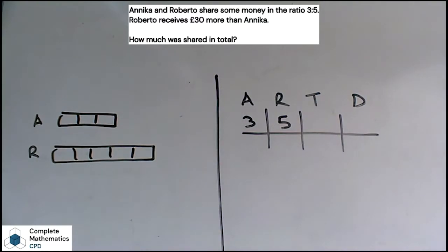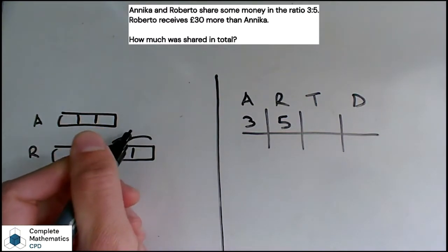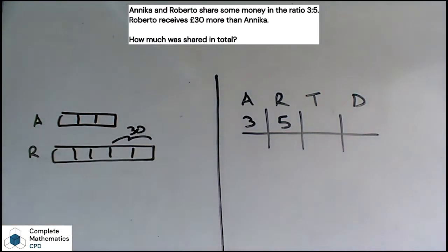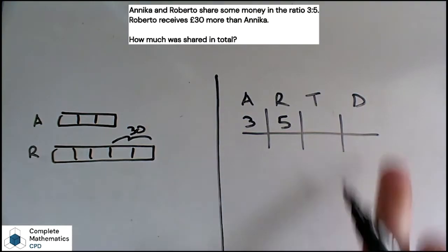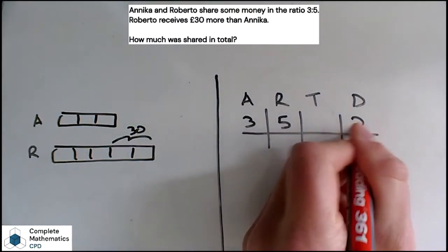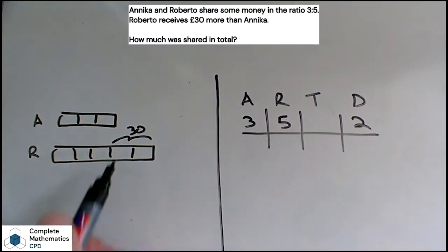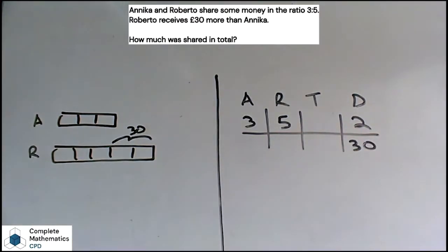Okay, let's read the next bit of information then. So Roberto receives £30 more than Anika. On the bar model we're looking at these two extra parts here being worth £30. Where does that sit in our ratio table? Well, that goes in our difference column. We know that Roberto gets two parts more than Anika, these two parts here, and those two parts are worth £30.